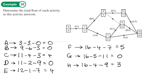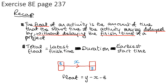Although this question doesn't explicitly ask about critical activities, we can use the float values to identify them. Activities A, B, D, and G are critical — they have a float of zero, meaning they cannot be delayed without delaying the whole project's finish time. That gives us the critical path. You should now be able to do exercise 8E on page 237 of the textbook.